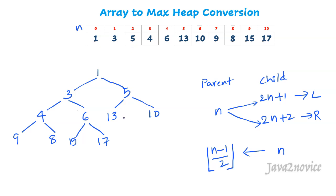Let's take another example. Take the element at index 8 — the element is 8, so n is 8. (8−1)/2 = 7/2 = 3 (floor), so its parent is at index 3, which is element 4. We can visualize this in the binary heap tree. Hope you understood how to calculate parent and child index positions in the given array.